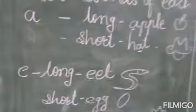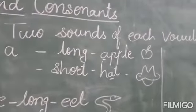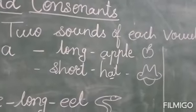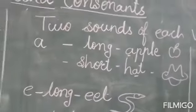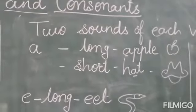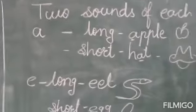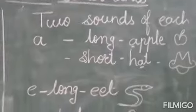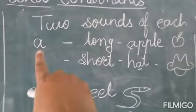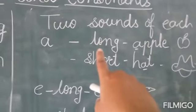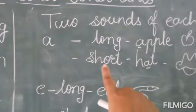Now we are going to learn the sounds of the vowels. Each vowel has two sounds. Now we are going to learn two sounds of each vowel. First is A. The letter A has two sounds, long and short.